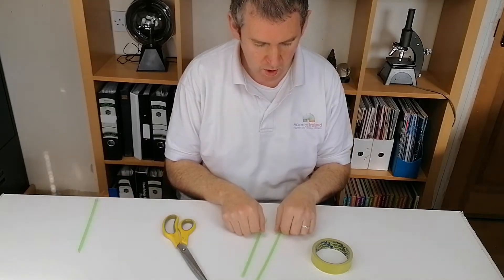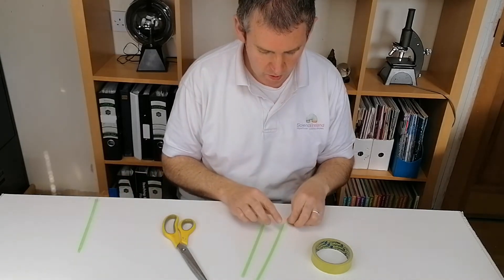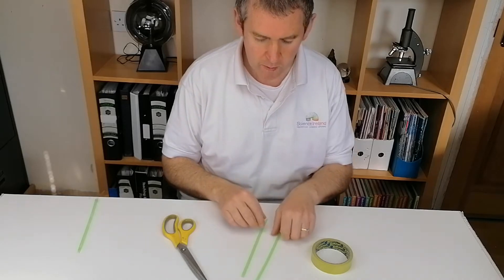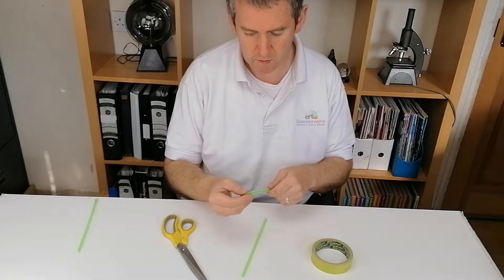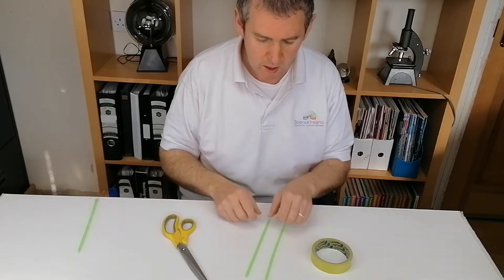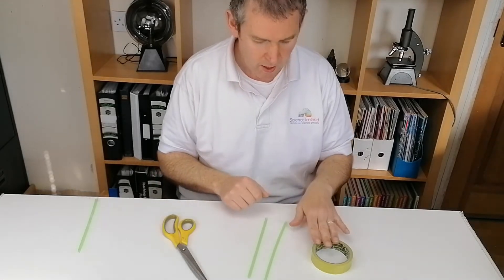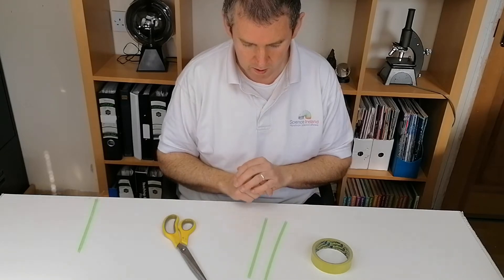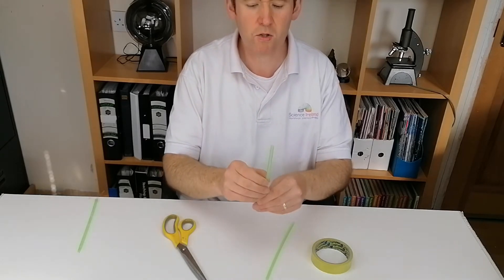To do this you're going to need two straws, two plastic straws. Now you can make it with paper straws but you will need a little bit of plastic for the end of it. So if you want to use paper straws you can do that, but you'll still need to do the end of it in a plastic straw. And then a little bit of tape and scissors.